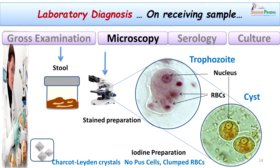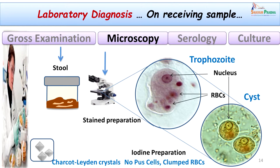Moving to microscopy, we did a normal saline preparation in which we could see trophozoites, though they were not motile. Stained preparation also showed trophozoites, about 20 to 30 micrometers in size with a nucleus, and importantly, ingested RBCs — a characteristic feature of Entamoeba trophozoites. Iodine preparation was also done. Without concentration we did not appreciate much, but after formalin-ether concentration technique we could see cysts of the parasite, having a refractile cyst wall and glycogen mass inside. We could also see Charcot-Leyden crystals, clear diamond-shaped crystals seen mostly in amoebiasis.